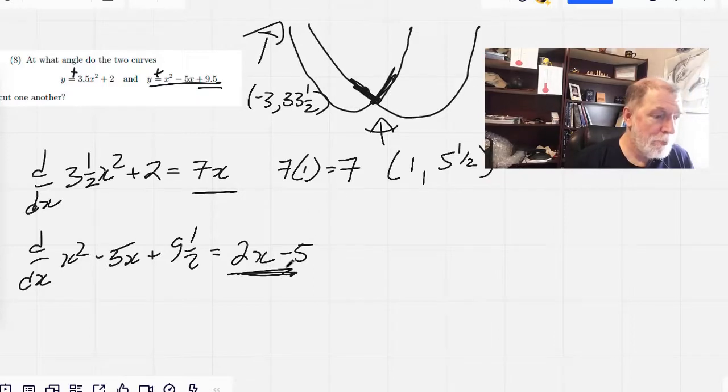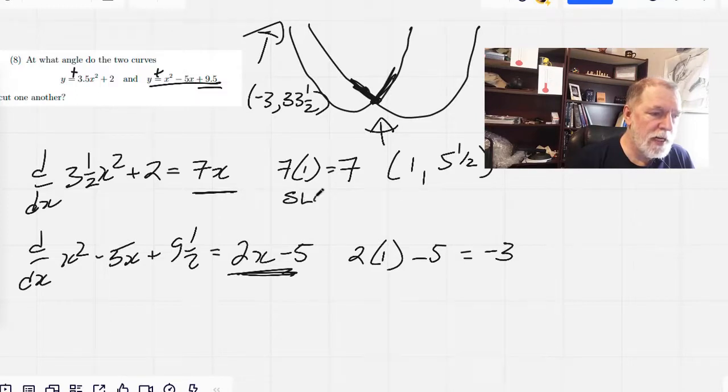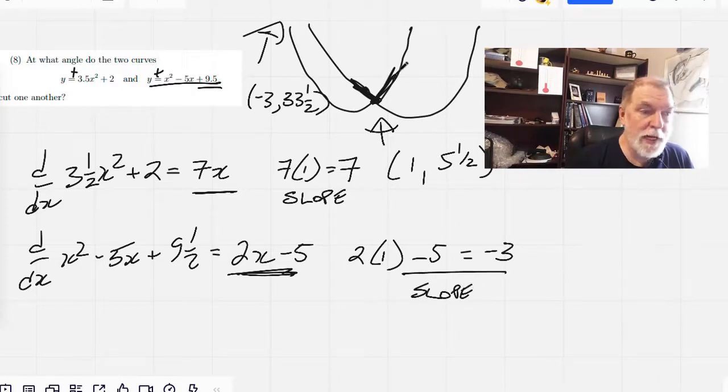Plug in the 1 and you're going to end up with 2 times 1 minus 5 equals negative 3. So that's 2 minus 5 is negative 3. So that's one slope and this is the other slope. So this must be the 7 slope and this must be the negative 3 slope.